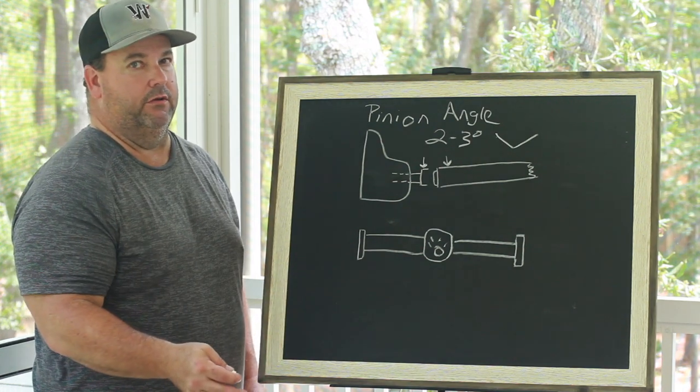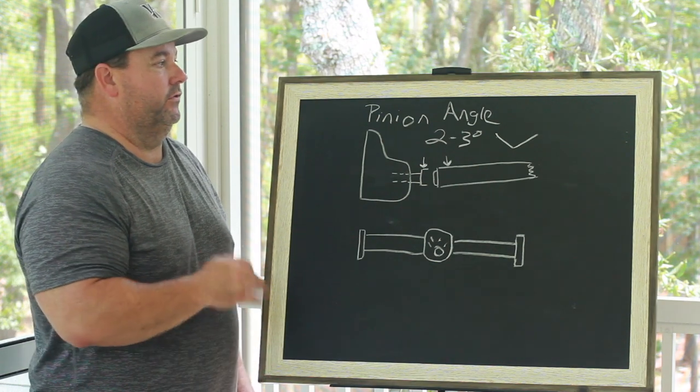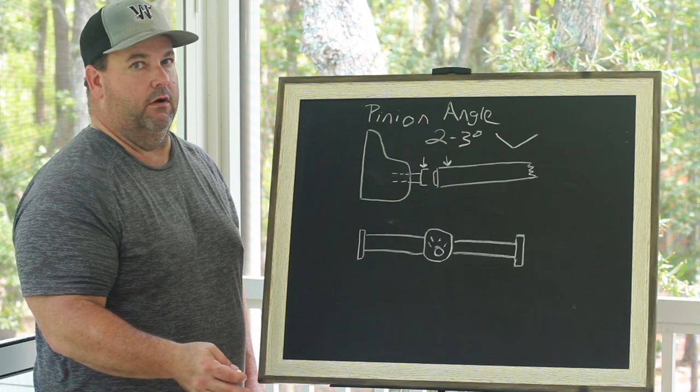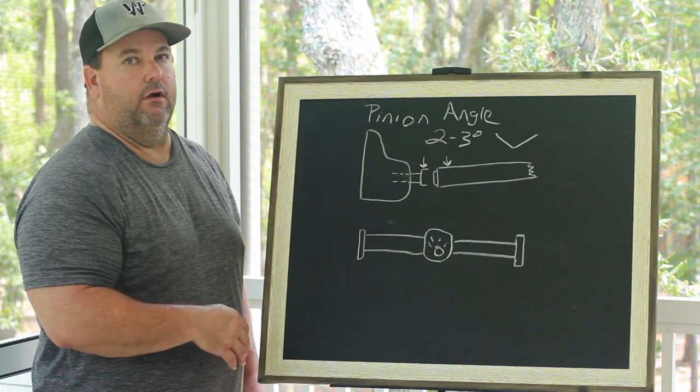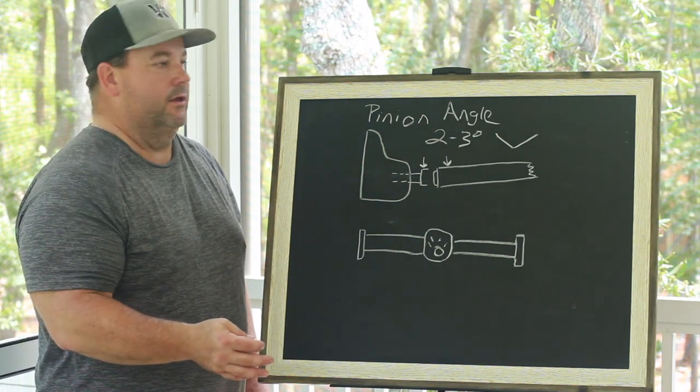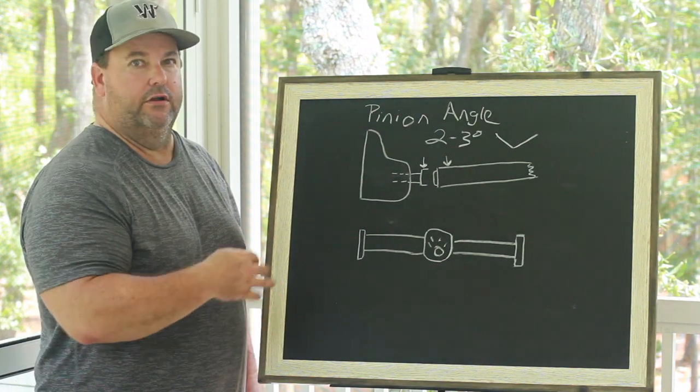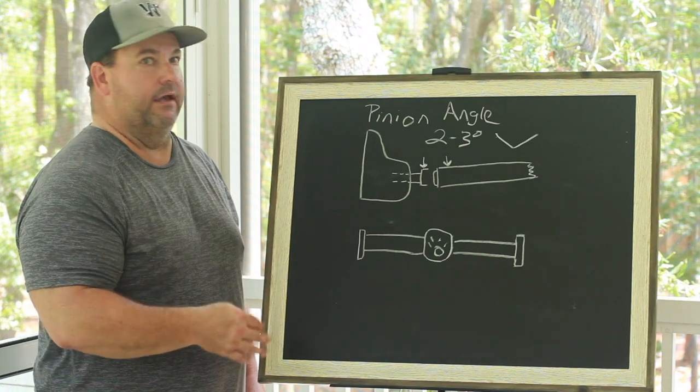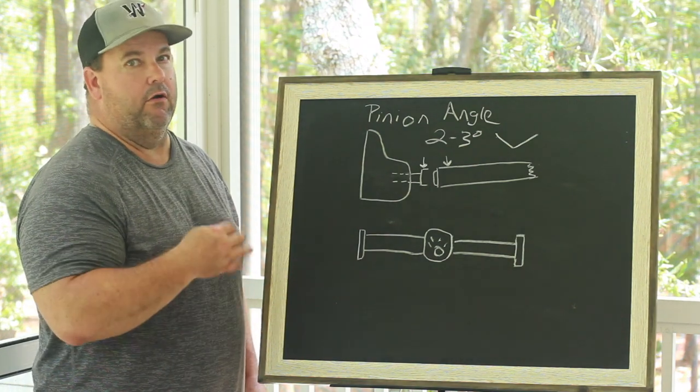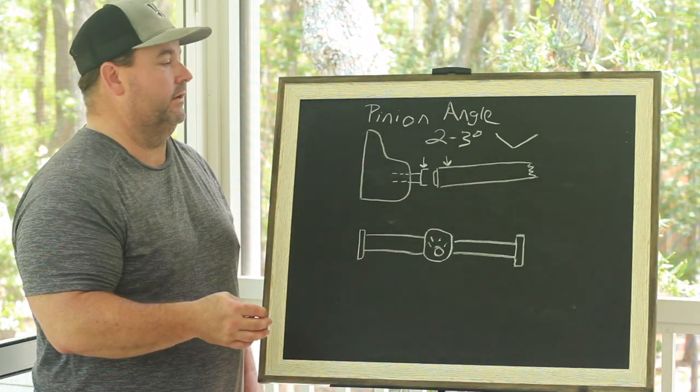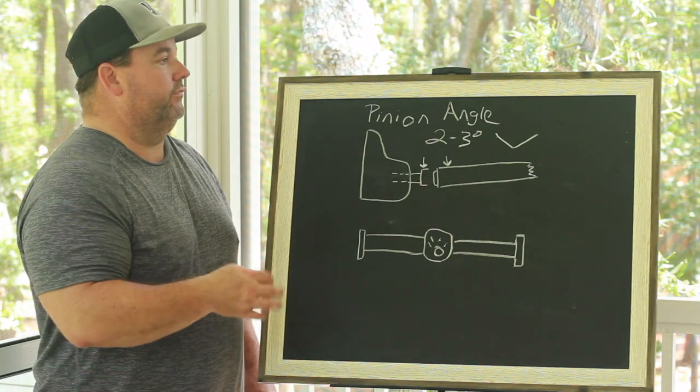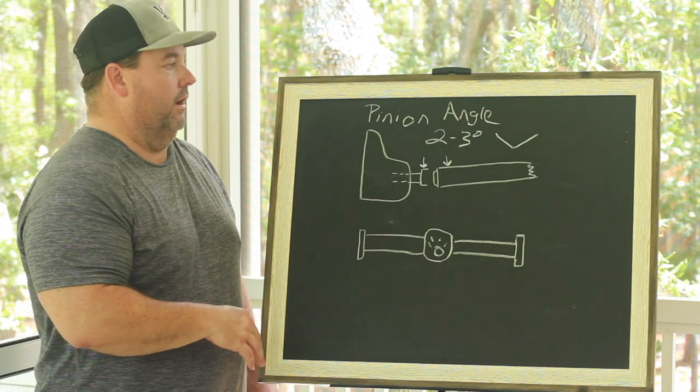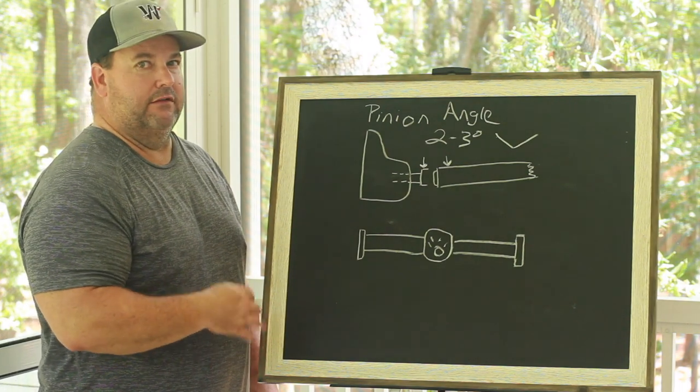And I'm really not trying to use pinion angle to put bite in the car or take bite away from the car. I'm gonna put bite in the car or ease up on bite based on my bar adjustments, my bar angles, my spring, my front end rise, the two-step, how hard am I hitting the car on the hit, on the launch. Those are ways that I'm gonna put bite in the car or take bite out the car. I'm not going to try to add bite or relax bite with pinion angle.